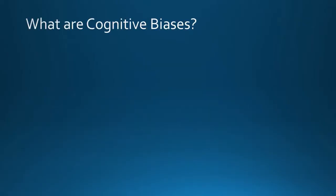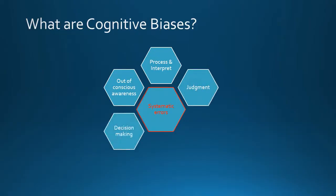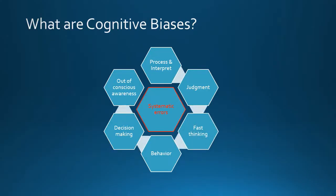What are cognitive biases? Cognitive biases are systematic errors in thinking that occur when people process and interpret information. These biases often occur outside of our conscious awareness and can affect our judgment, decision-making, and behavior. They are the result of our brain's need to process information quickly, which can lead to shortcuts and errors in our thinking.